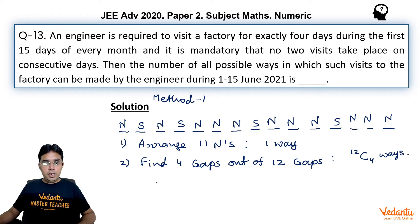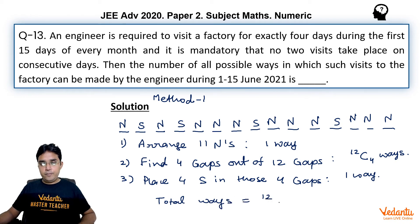And then just place those 4 S in those 4 selected gaps. And that will again be done in only one way because all S are identical. So the total ways or number of required ways would be just 12C4 which is 495, the answer. One very simple question. Let us see what could be method 2 for this one.